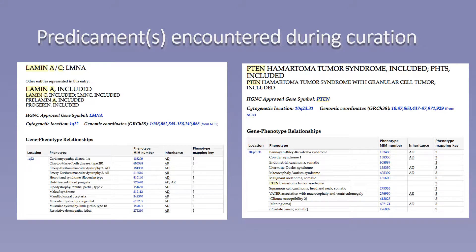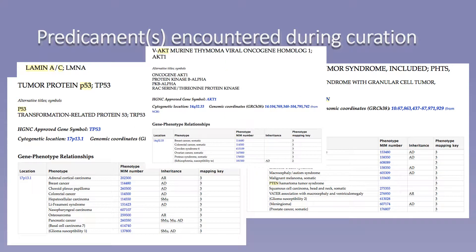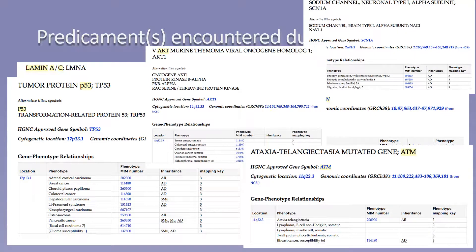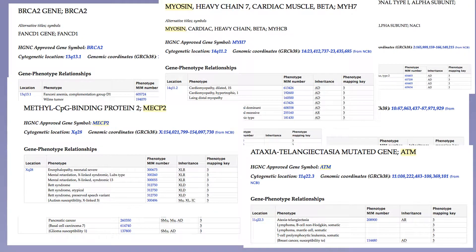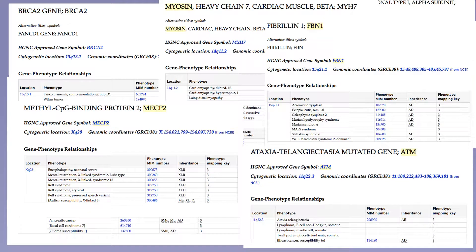Traditionally, diseases have been characterized based on the phenotype of an individual. With the advent of technologies to quickly identify the genetic basis of disease, a predicament of multiple disease entities for any given gene was created. For the curation of gene disease relationships, ClinGen would like to focus on what the gene is telling us about disease, which poses the question: which disease entity do we curate when any given gene could be associated with multiple entities? As shown by these examples, the predicament is not confined to any one disease area or working group but is present in all.